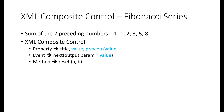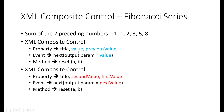Hello everyone. In this session, we'll continue looking at the XML composite control. Before we start, I wanted to make a few changes. Our XML composite control had three properties: title, value, and previous value, and an event called next with an output parameter called value. I felt the word value was being overused, so I changed it. The properties now have title, second value, and first value, and the output param for the next event is going to be next value. So first value and second value would be one and one, and the next value would be two.